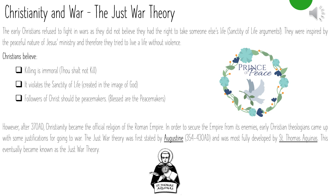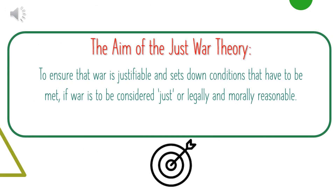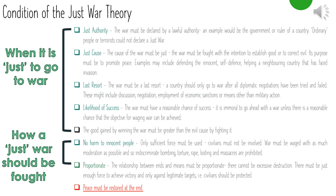You need to know the names Augustine and Saint Thomas Aquinas. The aim of the just war theory is to ensure that war is justifiable, setting down conditions that have to be met if a war is to be considered just — legally and morally reasonable. The just war theory sets conditions for when it is just to go to war and how a just war should be fought. War can only be declared by a lawful authority — for example, the government or ruler of a country. Ordinary people or terrorists could not declare a just war. A just war must have a just cause — the cause must be justifiable. The war must be fought with the intention to establish good or correct evil, with the ultimate purpose of promoting peace.